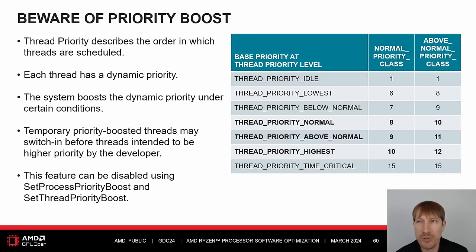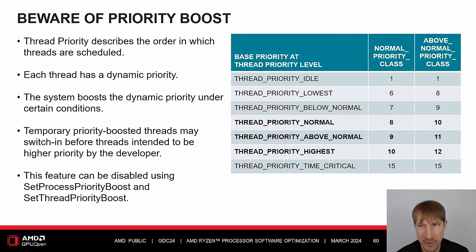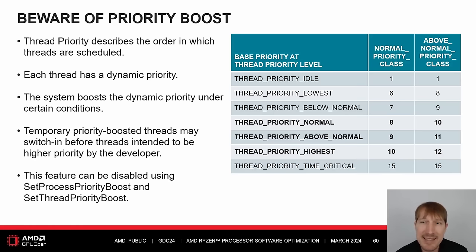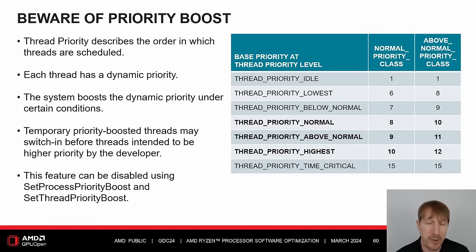Thread priority describes the order in which threads are scheduled. Each thread has a dynamic priority. The system boosts the dynamic priority under certain conditions such as foreground window change, user input, timer messages, and satisfied wait conditions. My colleagues have observed cases where temporary priority-boosted threads switched in before threads intended to be higher priority by the developer. In these cases, the user experience improved by disabling priority boost. The SetProcessPriorityBoost and SetThreadPriorityBoost functions can be used for this purpose.